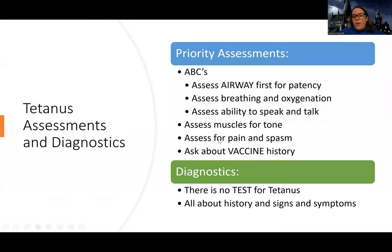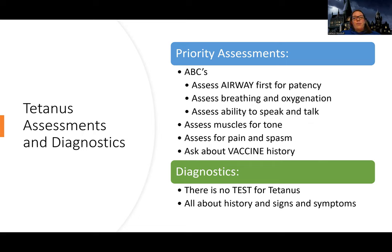Priority assessment-wise, because there's an airway issue here, I'm doing my ABCs. So I'm going to start by assessing the airway for patency. A lot of people say 'checking for patency' without knowing what that means. Checking SPO2 might tell you something, but you're actually looking to see if their airway is open. If someone's airway is not patent — signs of poor airway patency include: are they able to breathe? Are they able to talk to me? Are they passed out?